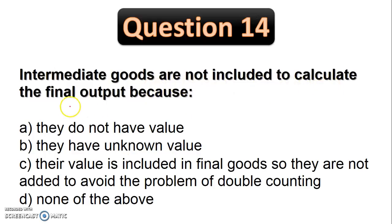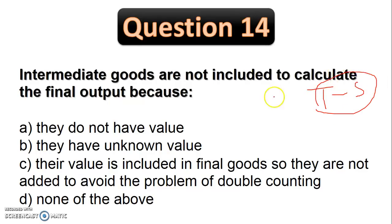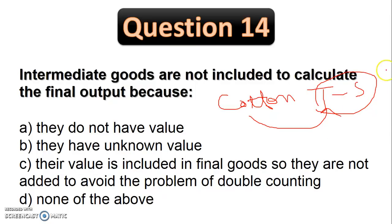Intermediate goods are not included to calculate the final output. For example, a t-shirt is a final product, while cotton and thread are intermediate goods. Intermediate goods are already included in the value of the final goods, so including them again would lead to double counting. Therefore, intermediate goods are excluded from calculating final output. The answer is C.